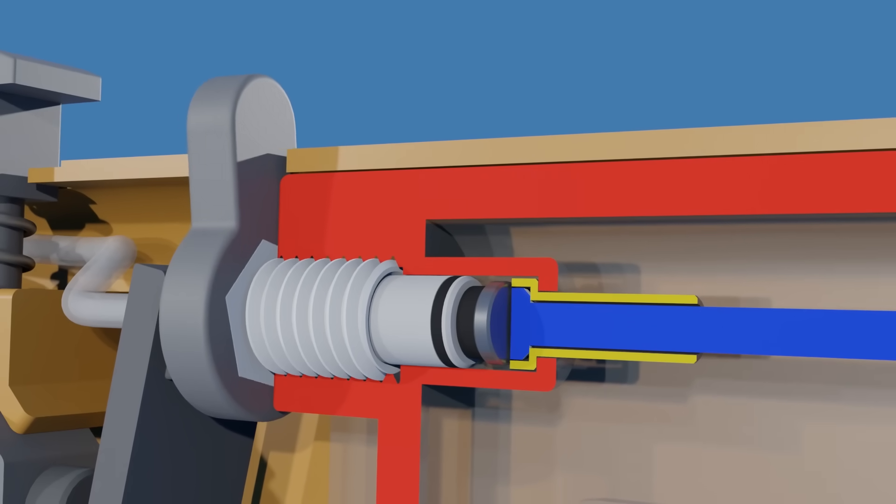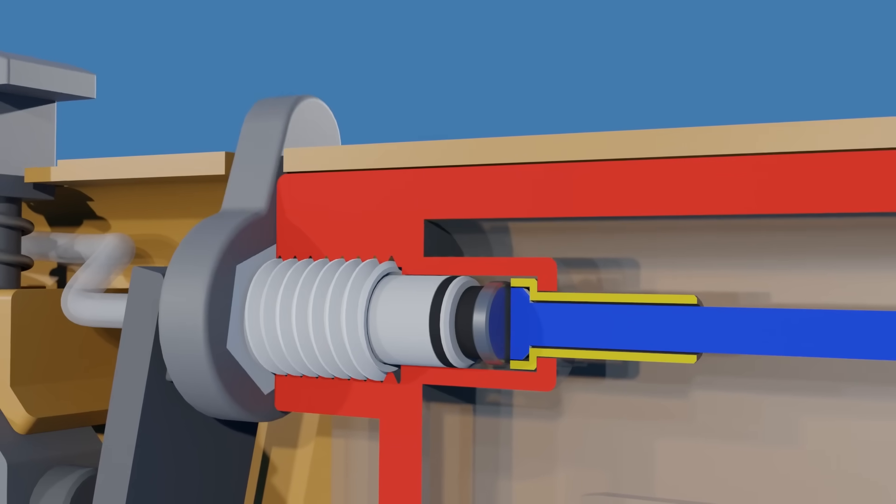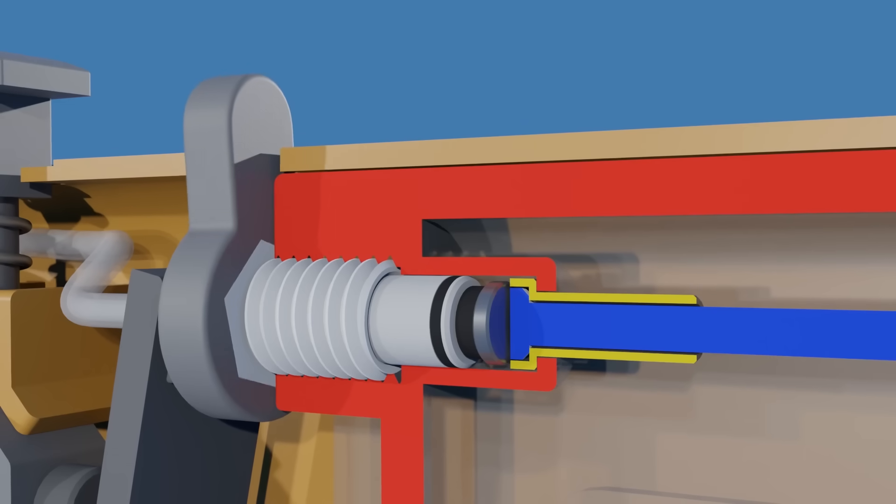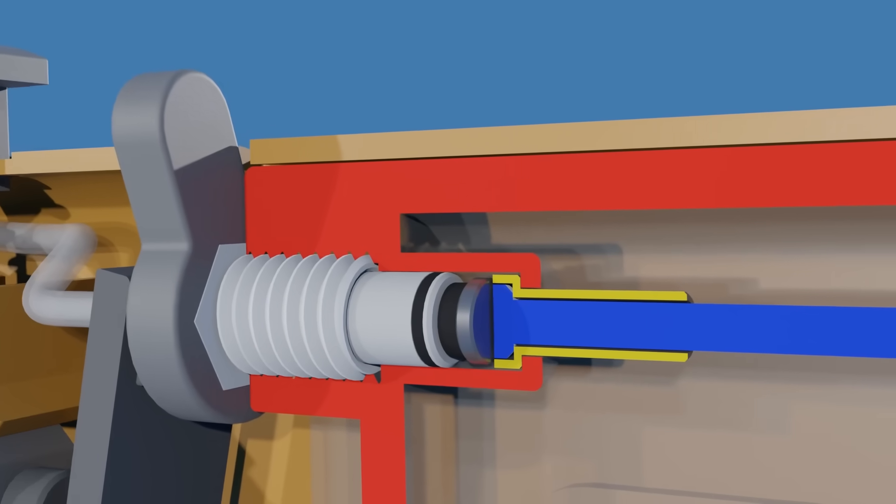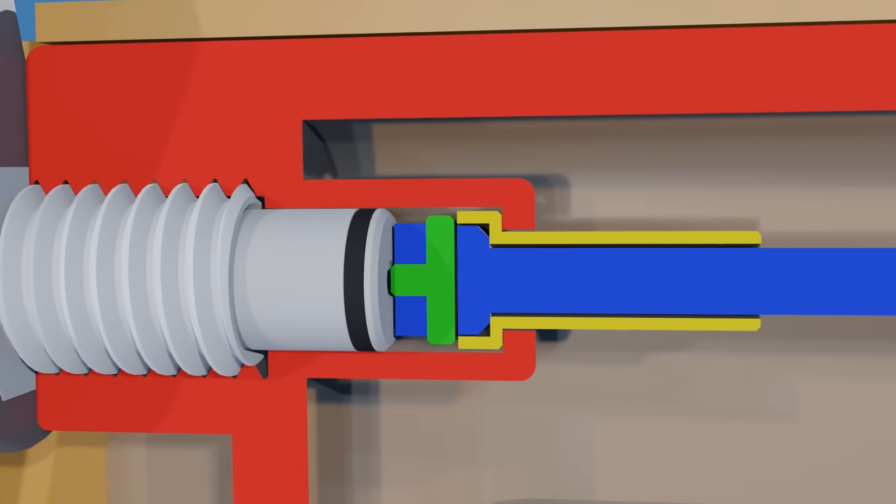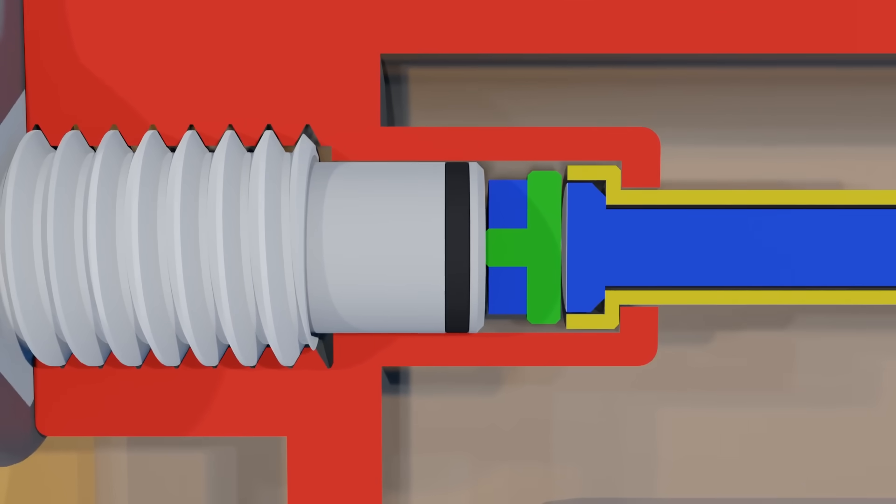When you adjust the lever, you are essentially tightening or loosening the valve body by a fraction of a turn. This compresses or releases the disc, altering the flow of butane entering the valve, which allows you to control the flame height.